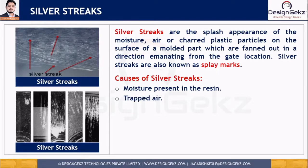The second reason is trapped air. During the plasticization period, a certain amount of gas can be trapped and blended into the melt material. If this trapped air does not escape during injection pressure, it could splay out on the surface of your molded part, leading to silver streaks or splay marks.